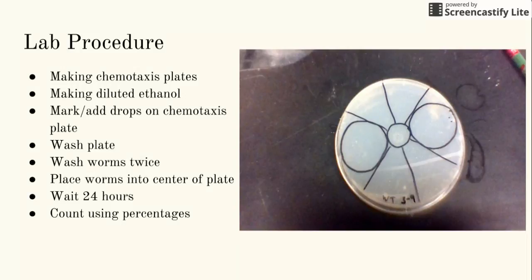Taking a pipette and removing as much water as possible without disturbing the worms. Once most is gone, close the tube and flip it upside down, then tap a few times. The worms will fall into the lid of the tube and can easily be picked up using a regular pipette. Transfer them into the center of the chemiotaxis plate and close the lid, leaving them there for 24 hours, storing them at room temperature.